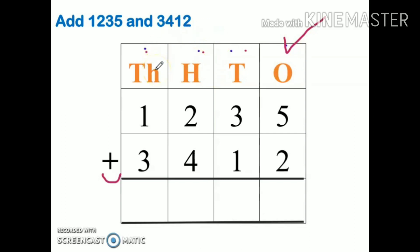I will start from one's place. My numbers are five and two. Add these two numbers. Take the bigger number in your mind and the smaller number on the fingers. Five, six, seven. My answer is seven.